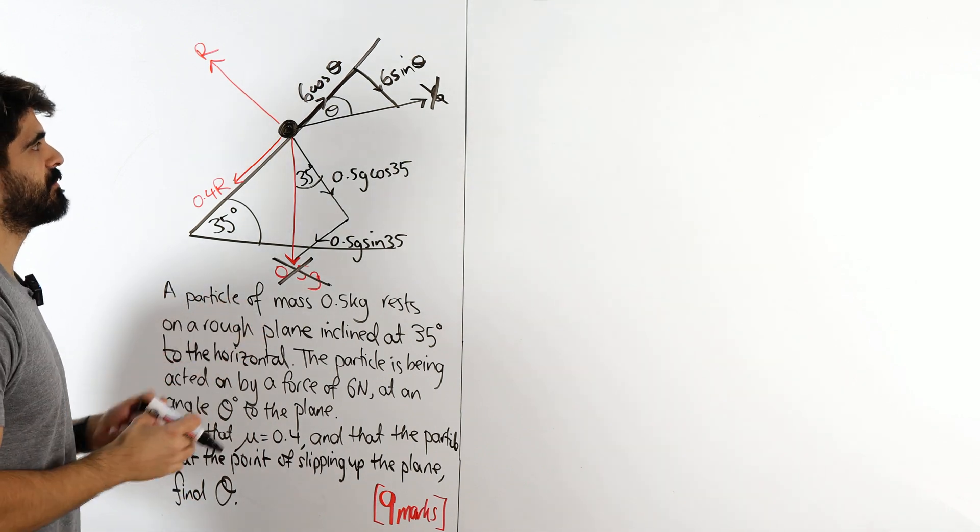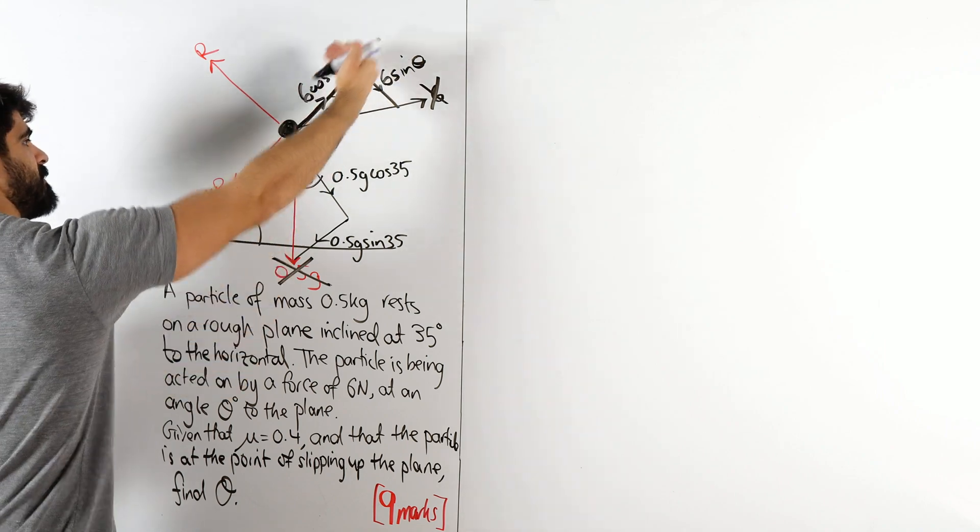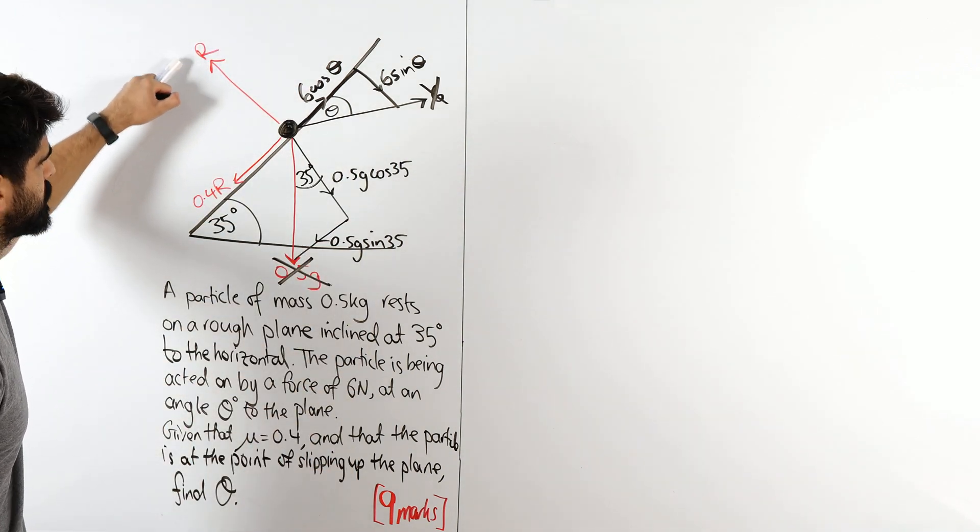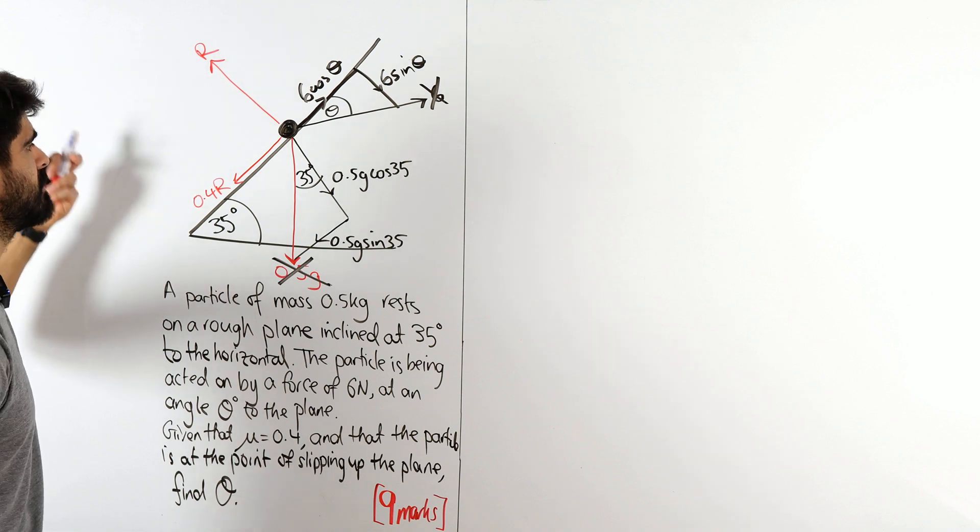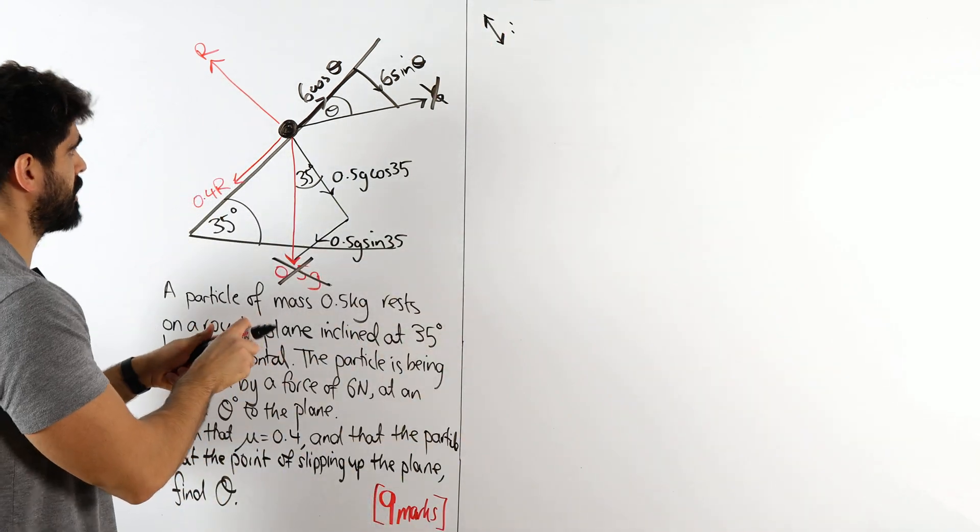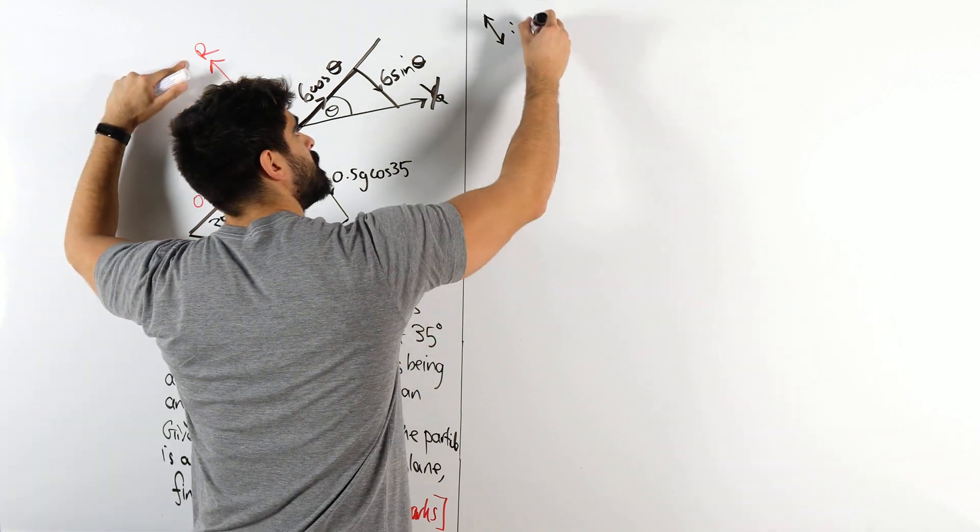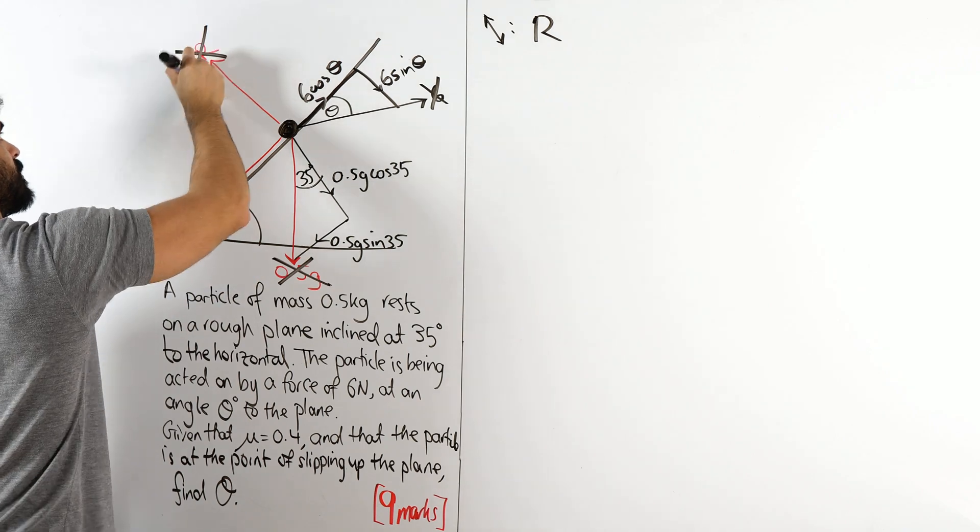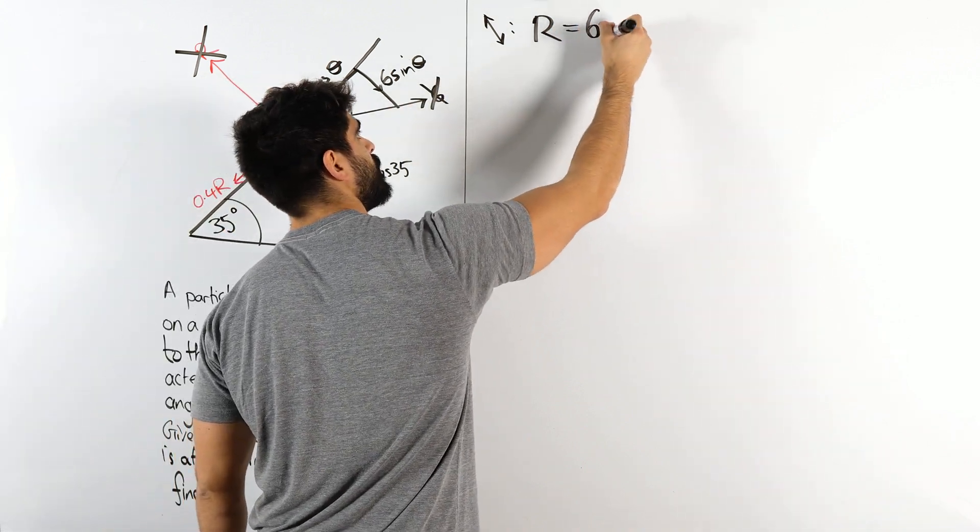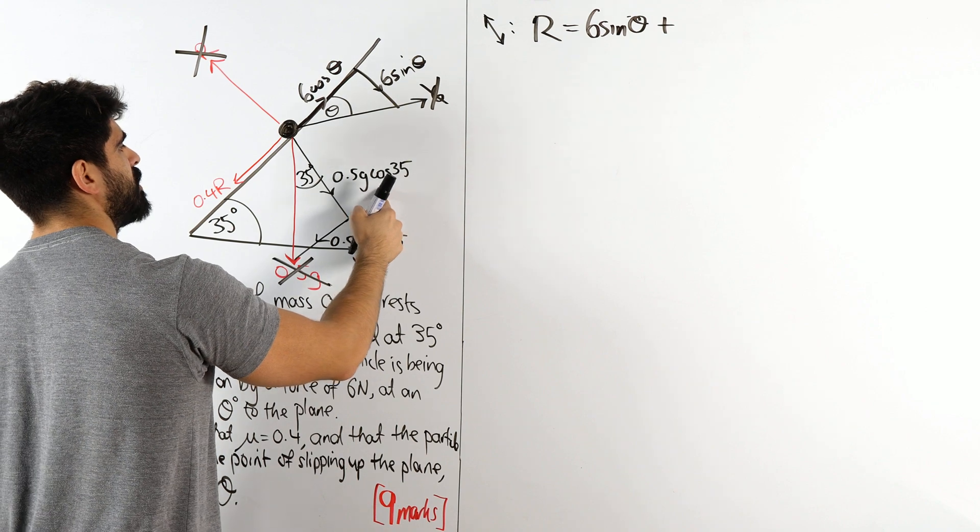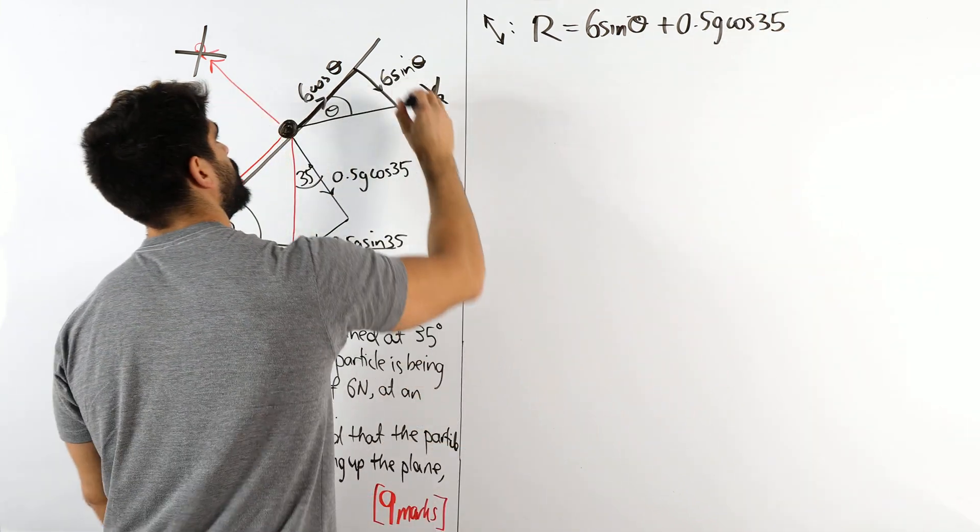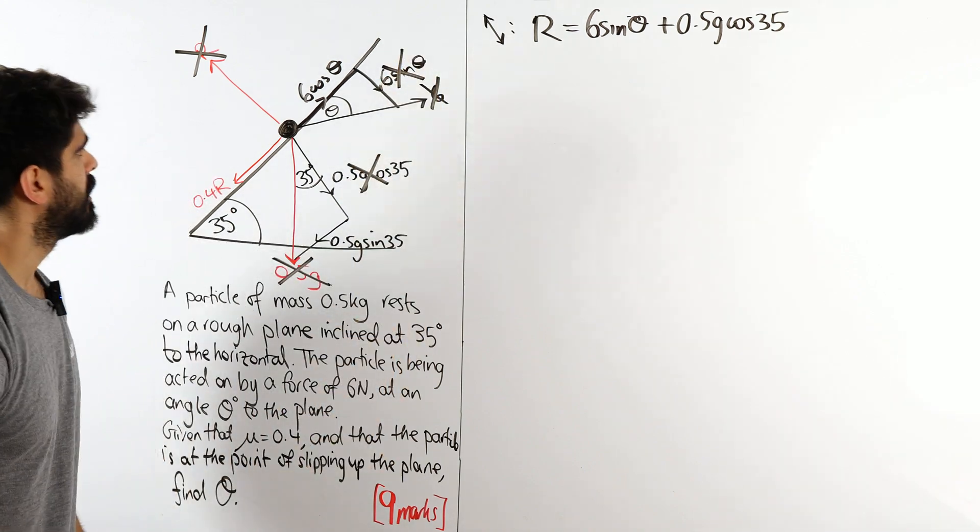Now this is good. This is the easy part. We're going to look at up and down the hill, they have to be equal and out and into the ground. It has to be equal. The particle is not moving. It's always better to look at the out and the in first because this depends on r so you might as well do it. So what we got? Out versus in. What is pointing out the ground? What's pointing out the ground is r. Anything else? No. Cross it off. That is going to have to be equal to anything pointing in which is 6 sin theta and 0.5g cos 35. Now, do not use a calculator for as long as possible.